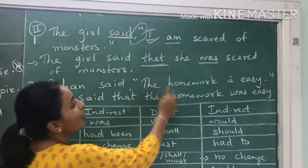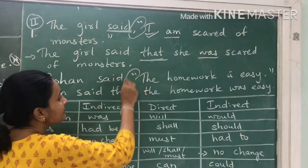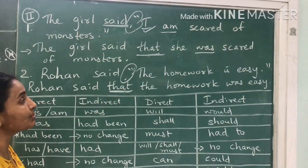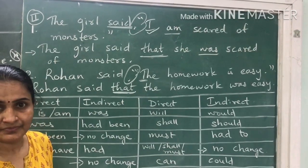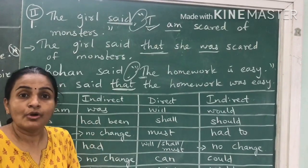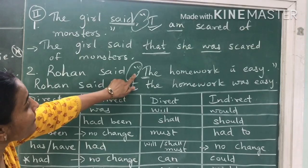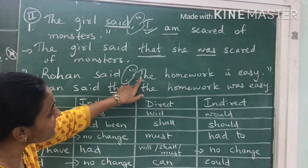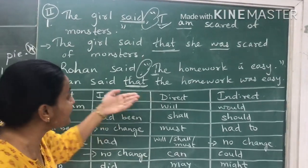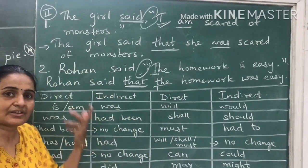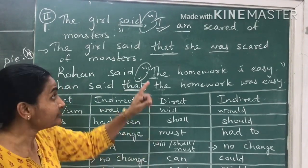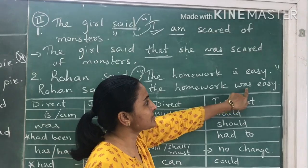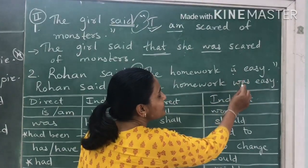Same way: Rohan said, "The homework is easy." So we will write Rohan said that — for this comma and open inverted, for connecting we use the word 'that'. One more thing to remember: after the open inverted comma, the first letter has to be capital. But when you change it to indirect, it won't remain a capital letter because this is a continuous sentence. So: Rohan said that the homework was easy. Present tense becomes past tense.